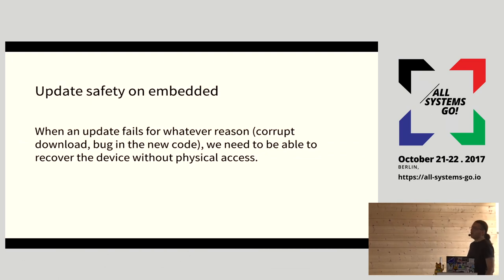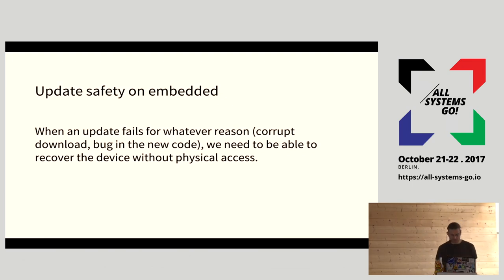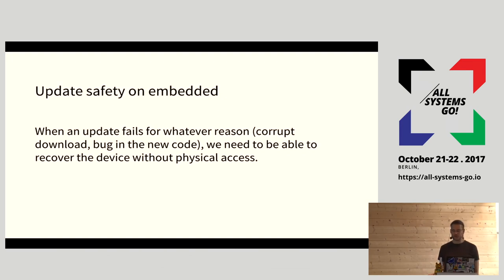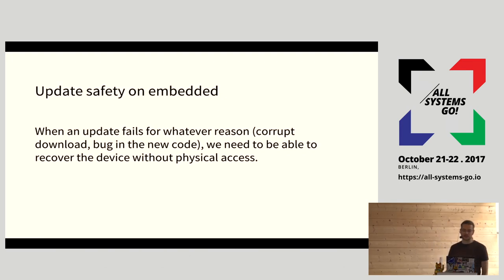Update safety on embedded really means one thing: if you update something, you better be able to roll it back. Because if you're not able to roll something back on a device that's out there millions of times without user interaction, the only interaction you get is people will turn off the device and you send them a new one. If you think of Dieselgate - it would have been a lot less costly if Volkswagen had been like Tesla and had OTA system updates.